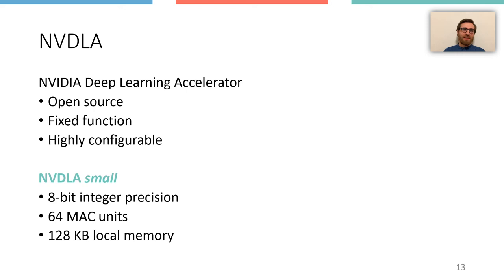To test and evaluate the integration of NVDLA in ESP, we use the NVDLA Small, which has 8-bit integer precision, 64 multiply and accumulate units, 128 kilobytes of local memory, and a 64-bit AXI interface.